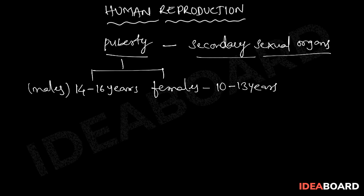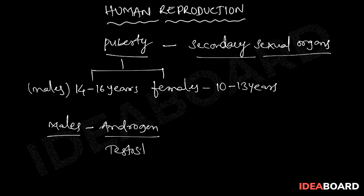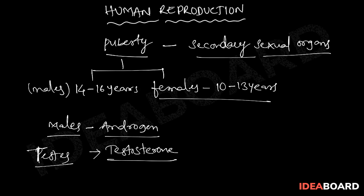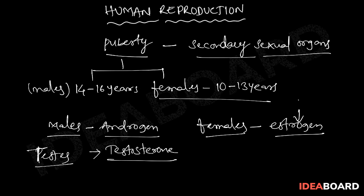During puberty, the development of secondary sexual organs in males and females is influenced by secondary sexual hormones. In males, the secondary sexual hormones are called androgens, and the major androgen is testosterone. Testosterone is the hormone which influences the development of secondary sexual characters in males, and it is secreted by the testis. In females, secondary sexual organs develop under the influence of the hormone estrogen, which is synthesized in the ovary.